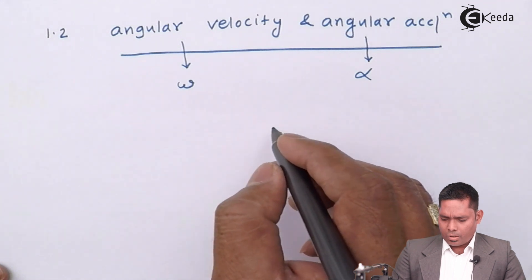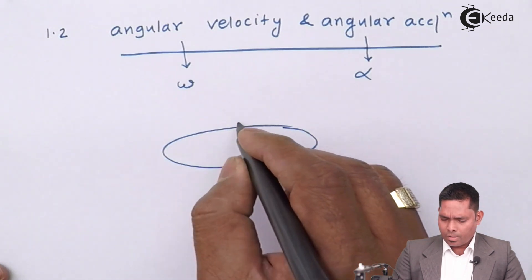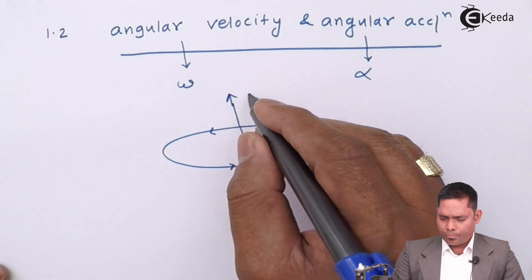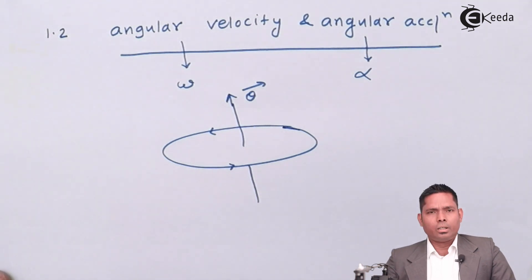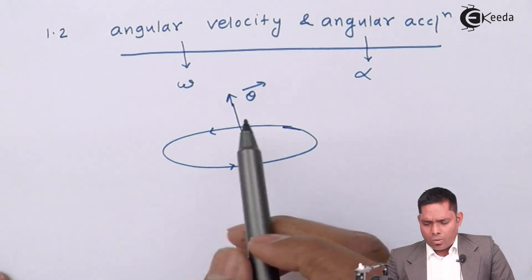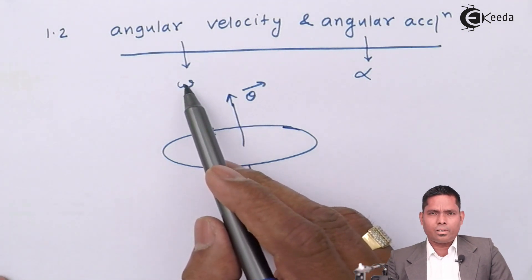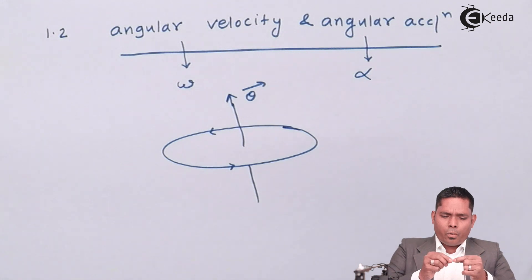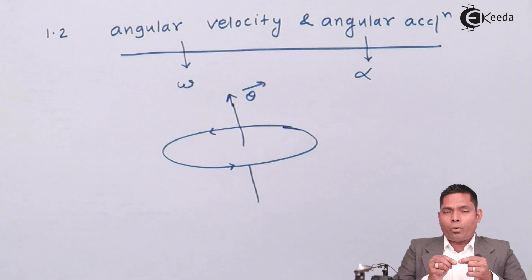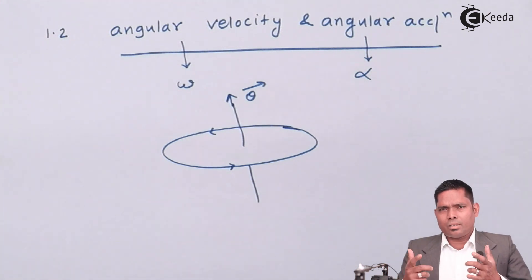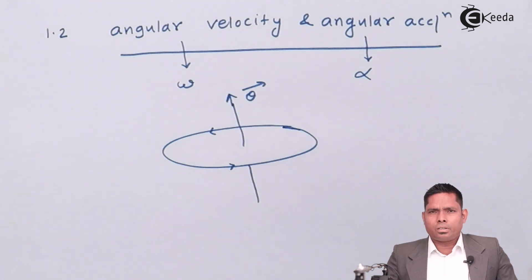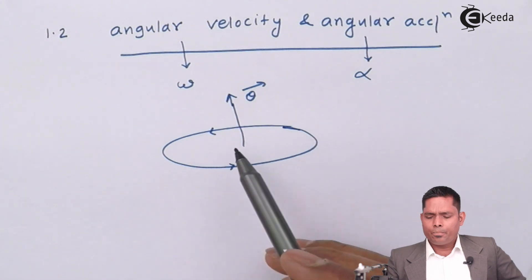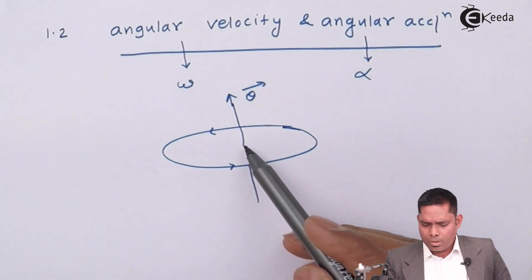Now, if a body moves in a circular path in an anticlockwise sense, we know that this is the direction of theta, that is the angular displacement. What is angular velocity? Just like linear velocity — if an object changes its position linearly, how fast the position is changing, that rate of change of displacement is the velocity, that is the linear velocity. Similarly, how fast the object is moving in a circular path.